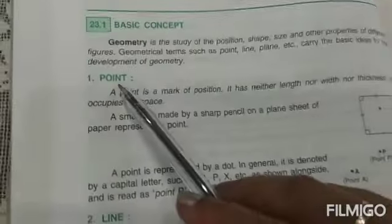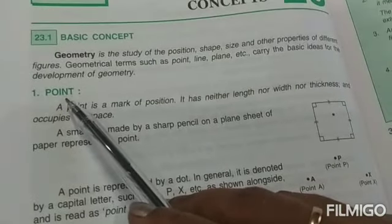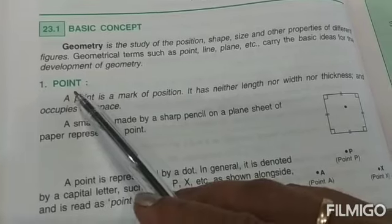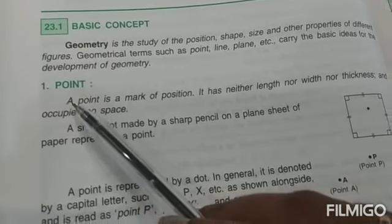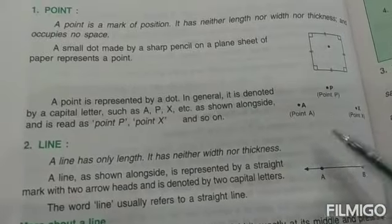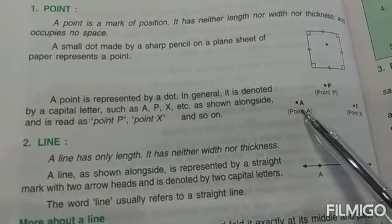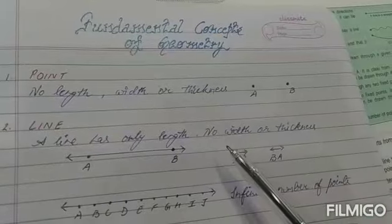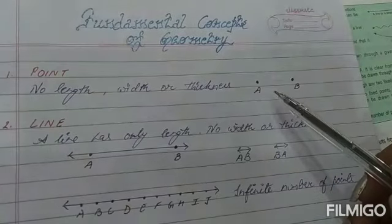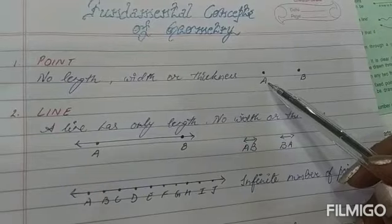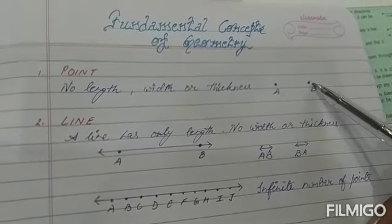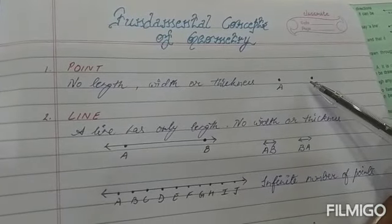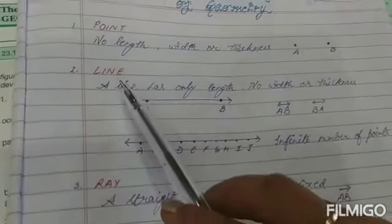The first term is a point. A point is just a dot which has no length, no width, or thickness — just a point, like a full stop. Whenever we represent a point, we always use a capital letter along with it, as you can see: point A, point P, point X. Here, with capital letter A I have represented point A, and with B this is point B. So a point has no length, no width, or thickness.